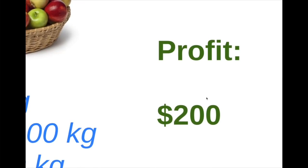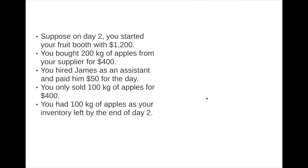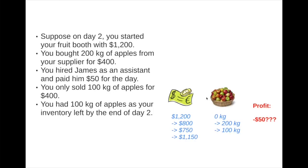In our second scenario, suppose on day two you started with $1,200. You bought 200 kilograms of apples for $400, hired James as an assistant and paid him $50, but only sold 100 kilograms for $400. You had 100 kilograms of apples remaining as inventory. The cash count goes from $1,200 down to $750 after the salary payment, then up to $1,150. If you want to calculate your profit for day two, could that be a loss of $50? Well, perhaps not — although you have less cash, you still have 100 kilograms of apples which can surely be sold for something.